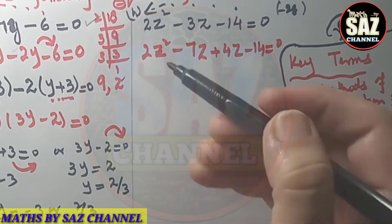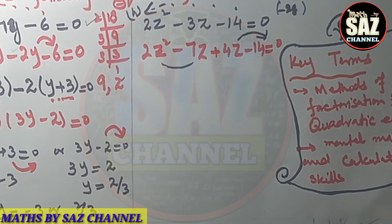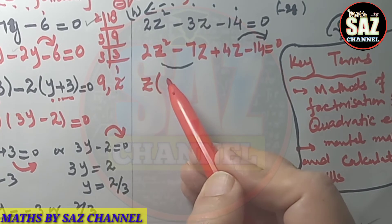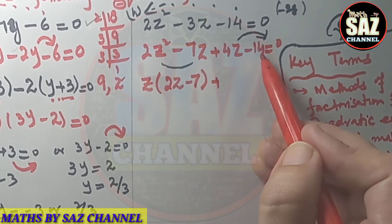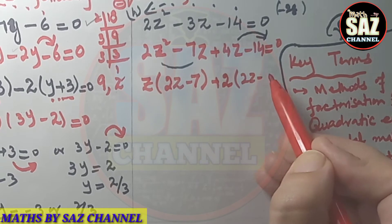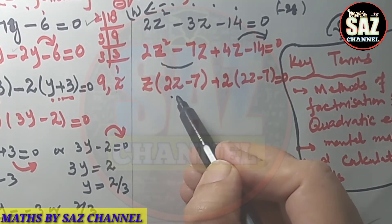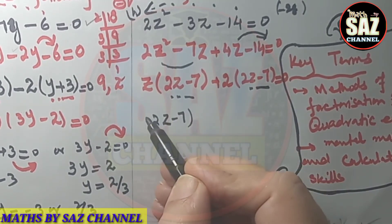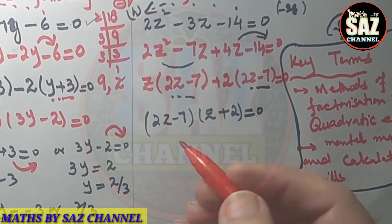Make the groups of like terms and extract a common factor from each. From 2z² - 7z, extract z — inside the bracket, 2z - 7. From 4z - 14, both 4 and 14 are in the table of 2, so extract 2 — inside the bracket, 2z - 7. The common group is (2z - 7). Extract it out: (2z - 7)(z + 2) = 0.